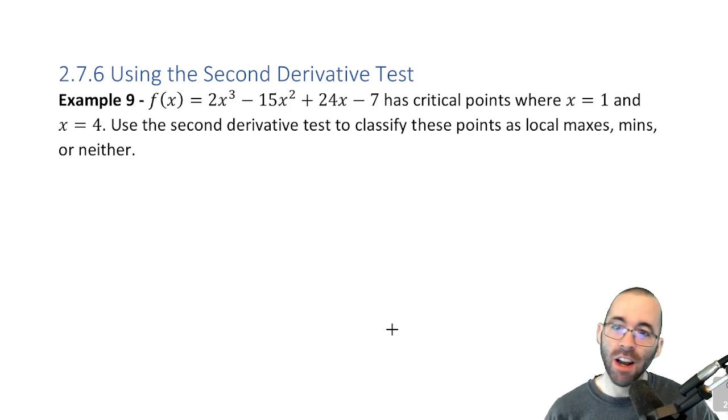We've got a full page to do this problem, and we're not going to use very much of it at all. So I'm telling you that we have a critical point when x equals 1 and when x equals 4 for this function. We use the second derivative test to classify these as local max or local mins or neither.